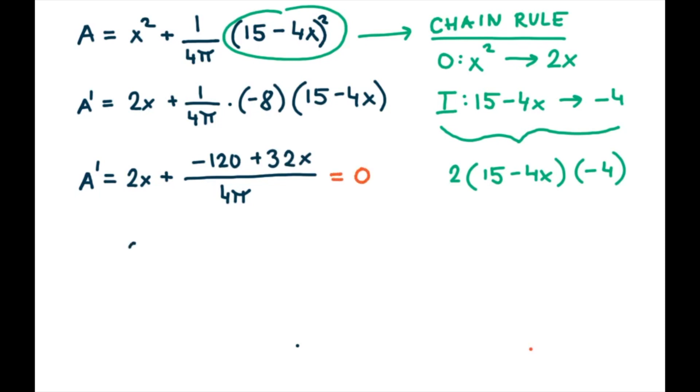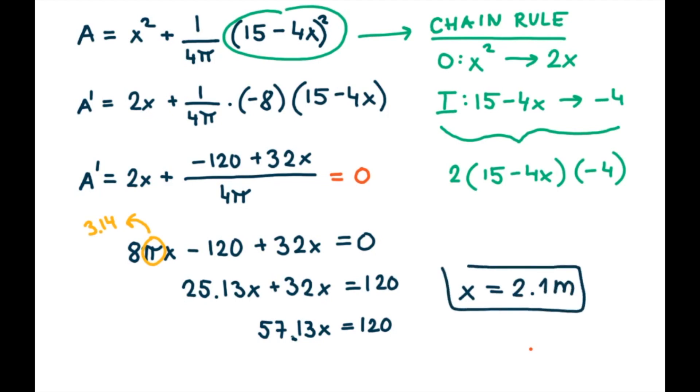And in order to get critical points, we set the equation to 0. And now we multiply by 4π to make it easier. And we know that π is 3.14, so we can simplify now and solve for x. So we found that x equals 2.1 meters, which will represent our one side of the square.